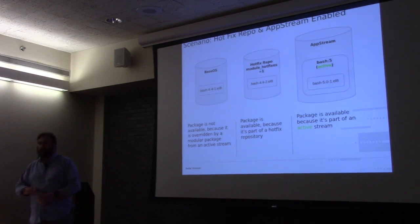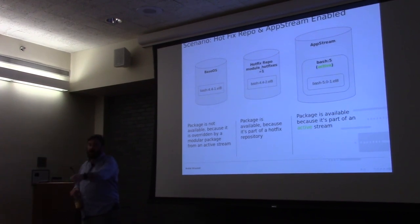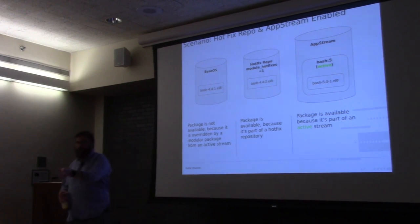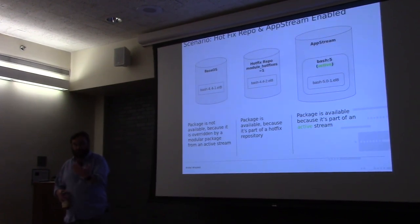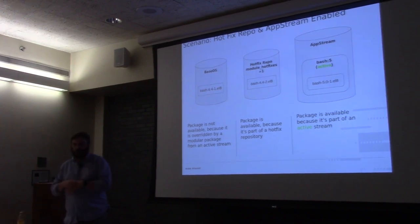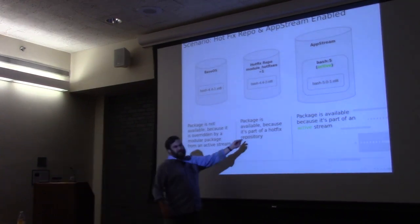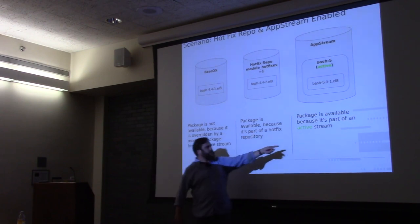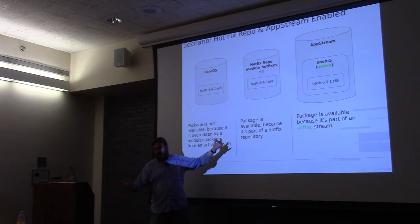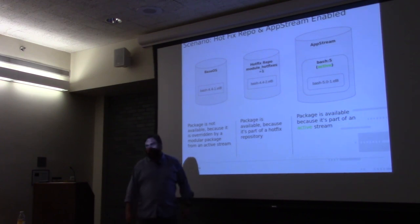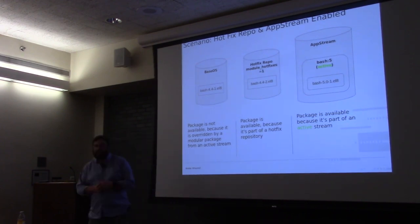So a hotfix repo makes normal NVR comparisons happen regardless of module status — but only for that hotfix repo. A hotfix, regardless of AppStreams, masks the original package. If libbar wasn't in the hotfix repo, it would still take whatever was in Base OS. There's definitely a missing slide for that scenario, but conceptually: the hotfix repo exists to allow specific overrides of modular packages when you need an urgent fix that the module would otherwise suppress.